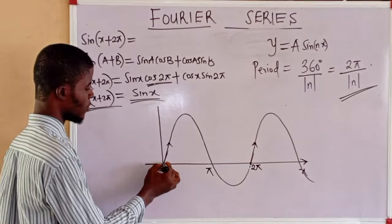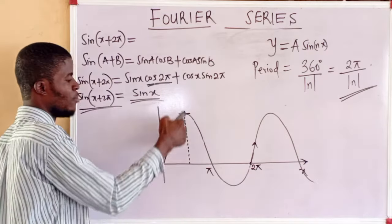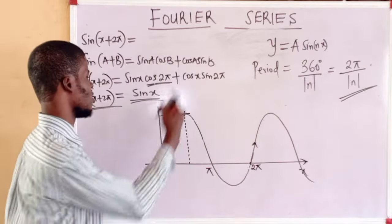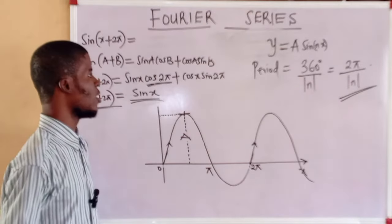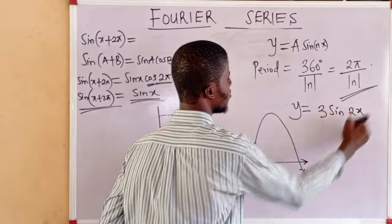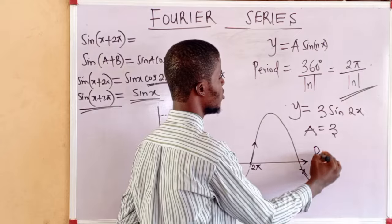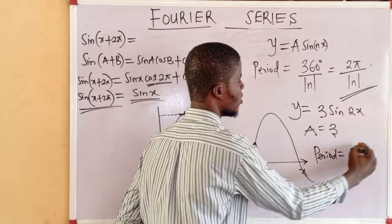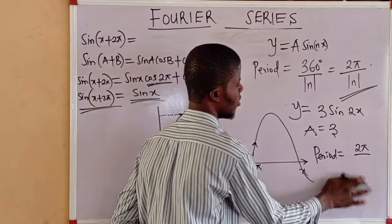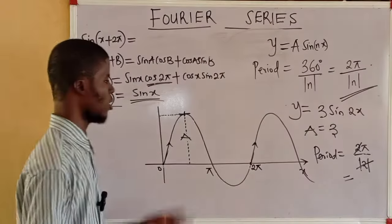The rest position is the baseline, and the maximum displacement — from the rest position to the peak — gives us the amplitude. Amplitude tells us how tall a periodic function is. For example, for y = 3sin(2x): the amplitude is 3, and the period is 2π / |2| = 2π / 2 = π.